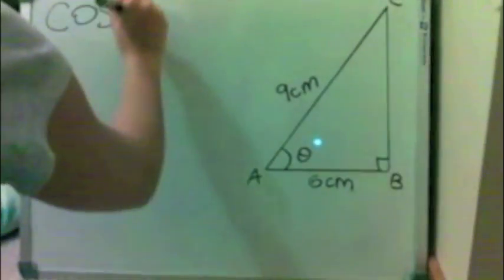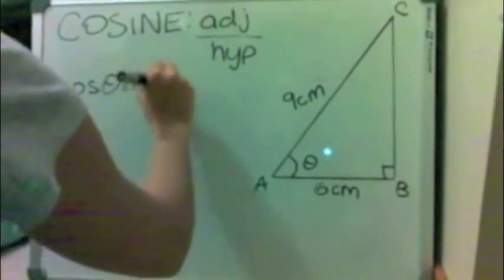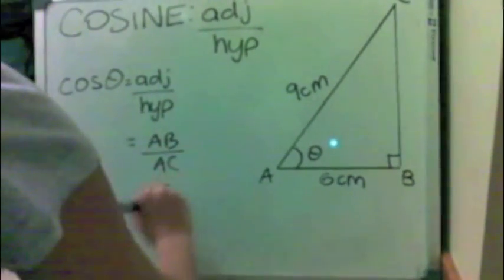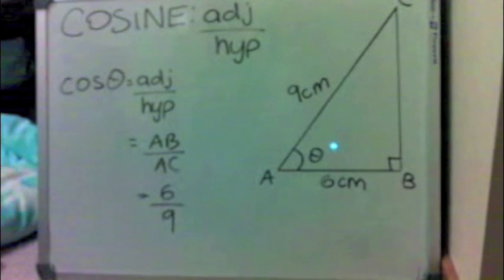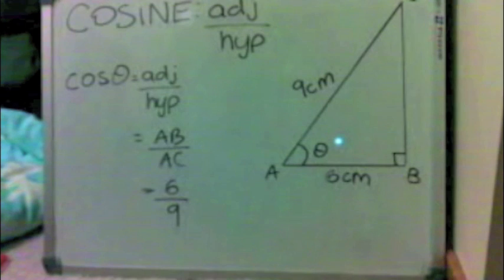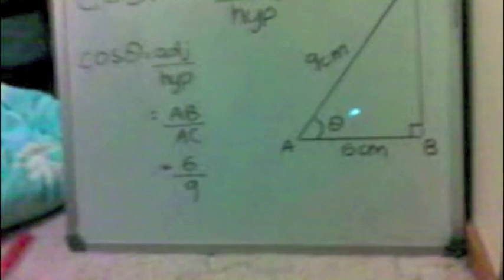For cosine, we need the hypotenuse and the adjacent side to the angle. In this example, we again have the unknown angle theta, and we are provided with the hypotenuse AC at 9cm and the adjacent side AB at 6cm. Since the triangle provides the two most important things for the cosine ratio, we solve the pronumeral using cosine.